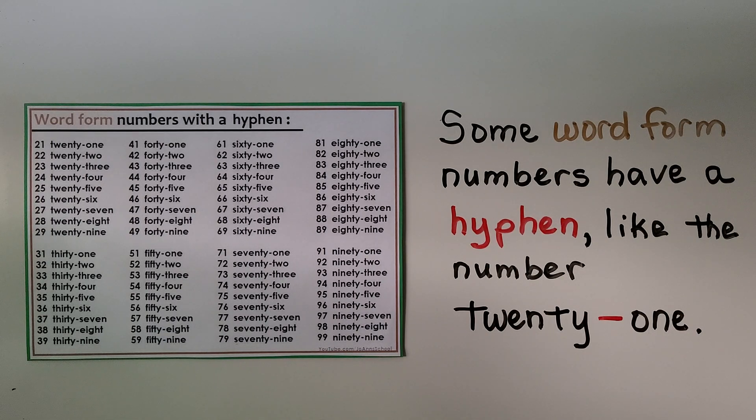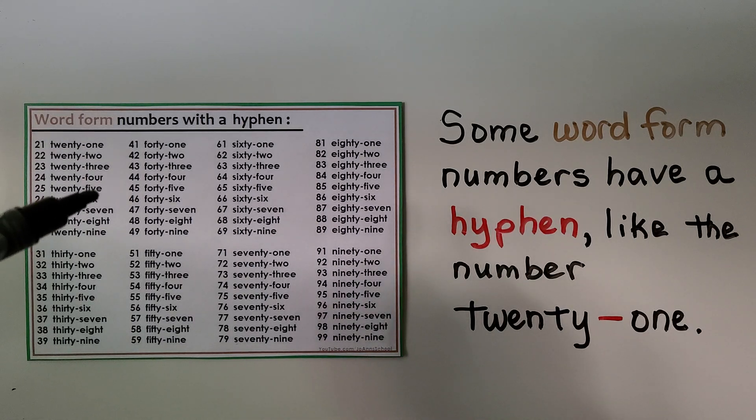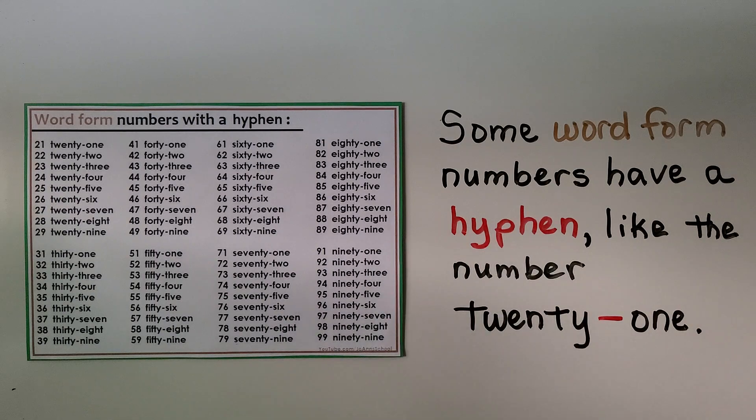You know a number has a hyphen if it ends with a 1, 2, 3, 4, 5, 6, 7, 8, or 9.